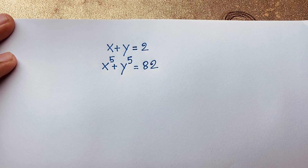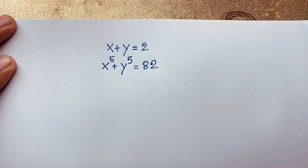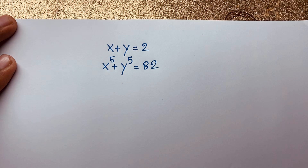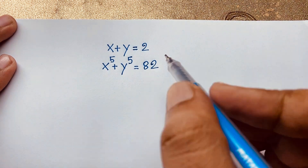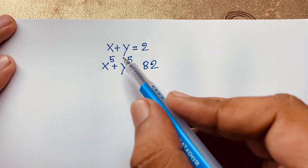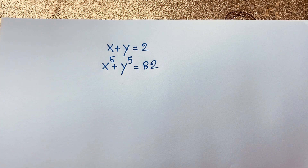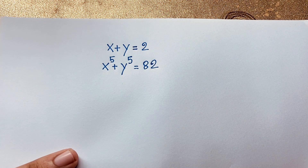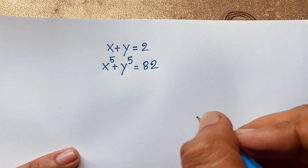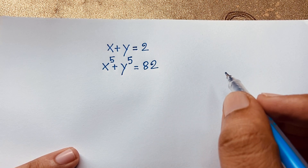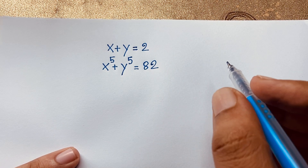Hello everyone, welcome to Rascal's Classroom. Today we have solved a nice math problem. This question is: x plus y is equal to 2, and x to the power 5 plus y to the power 5 is equal to 82. We will find out what is the value of x and y in this math problem. It is a long math question, so let's start.